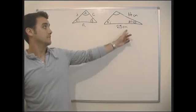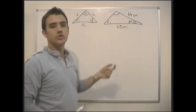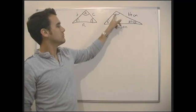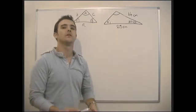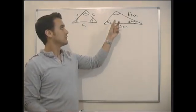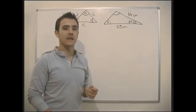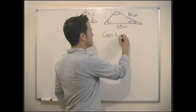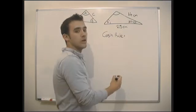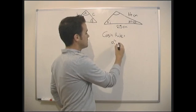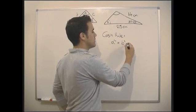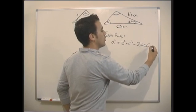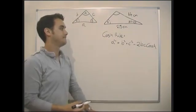Let's look at this example again. We can't use the sine rule because we don't have a side and an opposite angle — the sine rule requires both, and we don't have that here. So we're going to have to use the cosine rule. The cosine rule says that a squared equals b squared plus c squared minus two bc cos A.